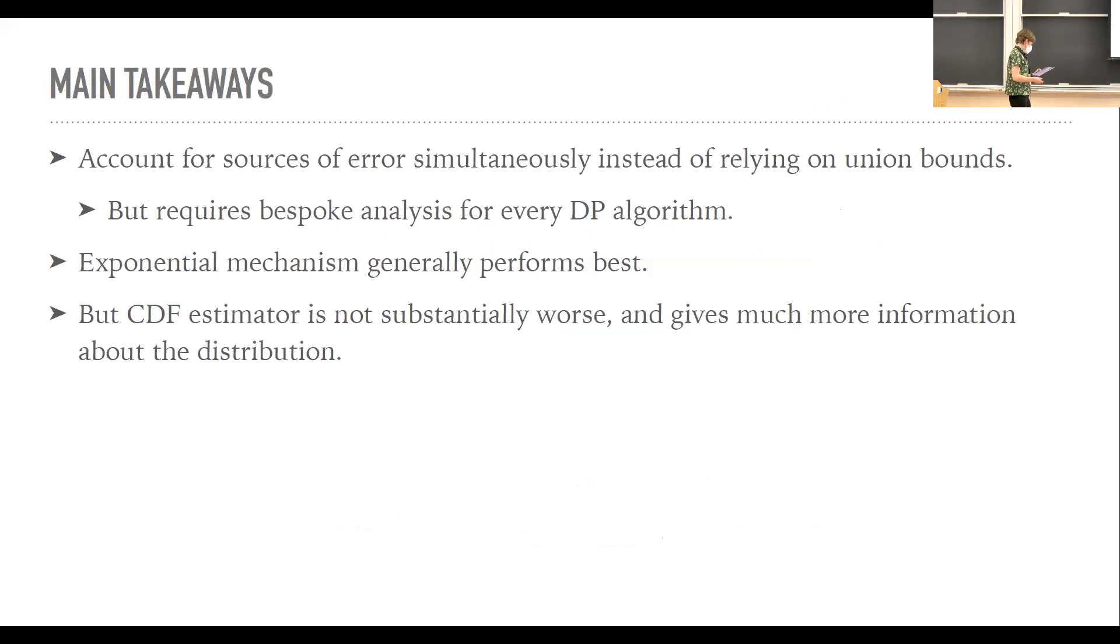So in conclusion, we covered several different methods for generating differentially private confidence intervals. And there's more in the appendix of the paper if you want to look at them. But these are kind of the two main ones. But the main takeaways that I'd like you to go away with aren't really specific necessarily to confidence intervals for medians. Mostly, if you're doing this type of analysis, remember that union bounds aren't always your best choice. The downside of doing this without the sort of cookbook union bound method is it does seem to require a much more bespoke analysis for every single possible mechanism you want to look at.